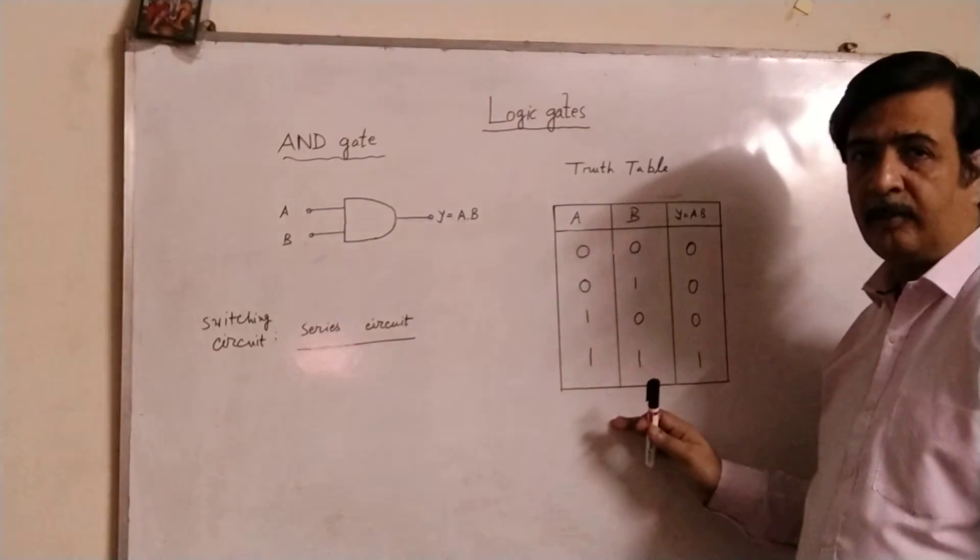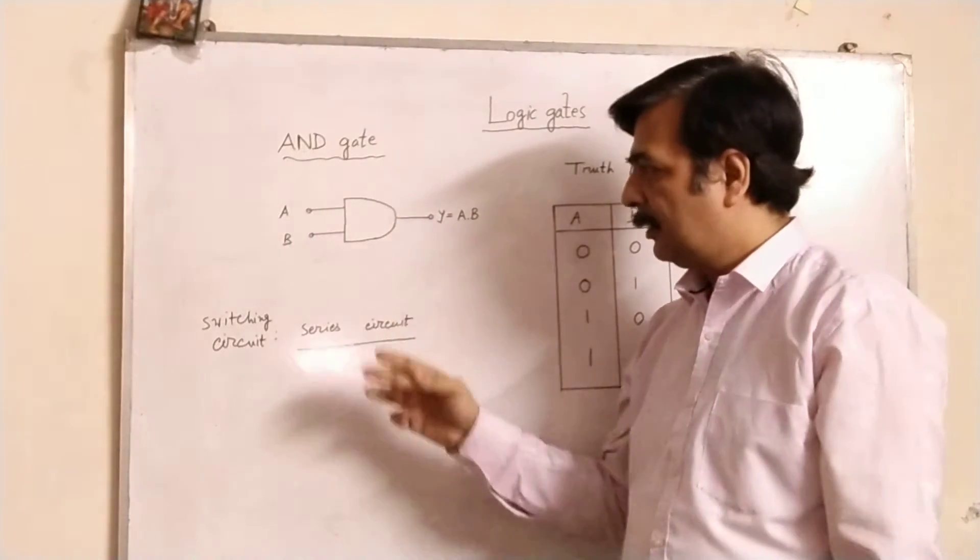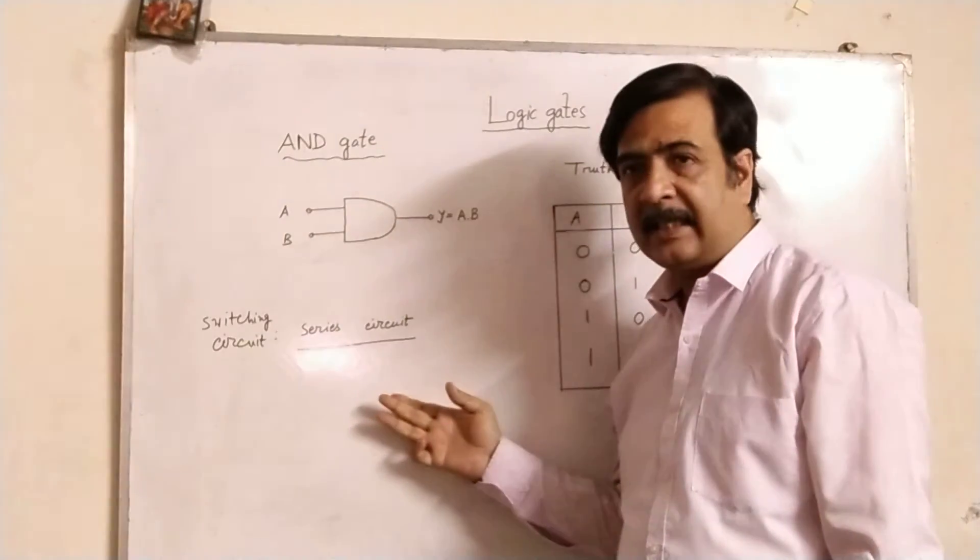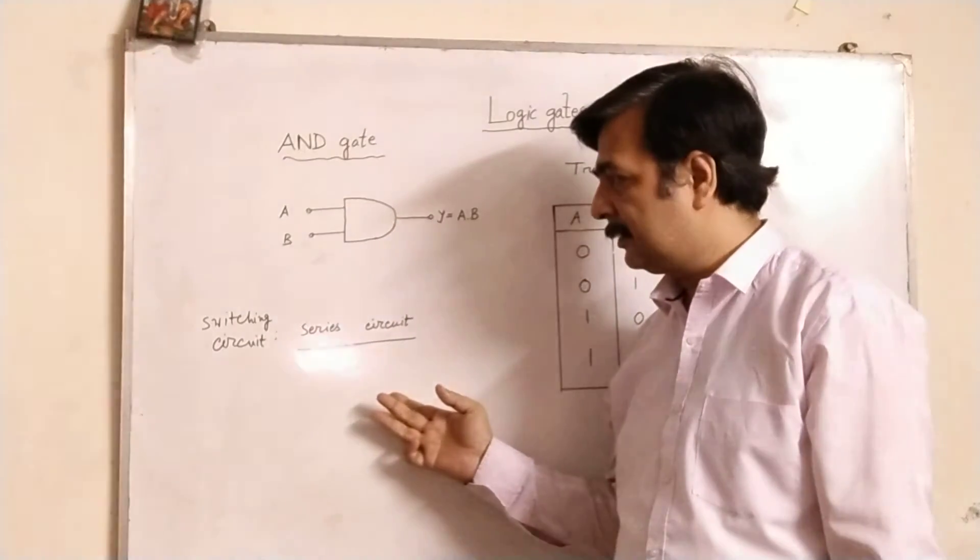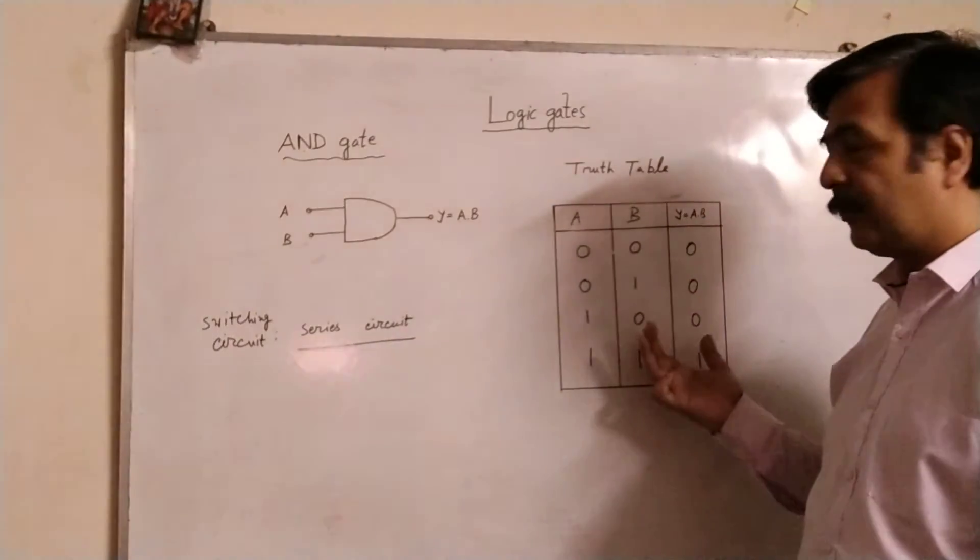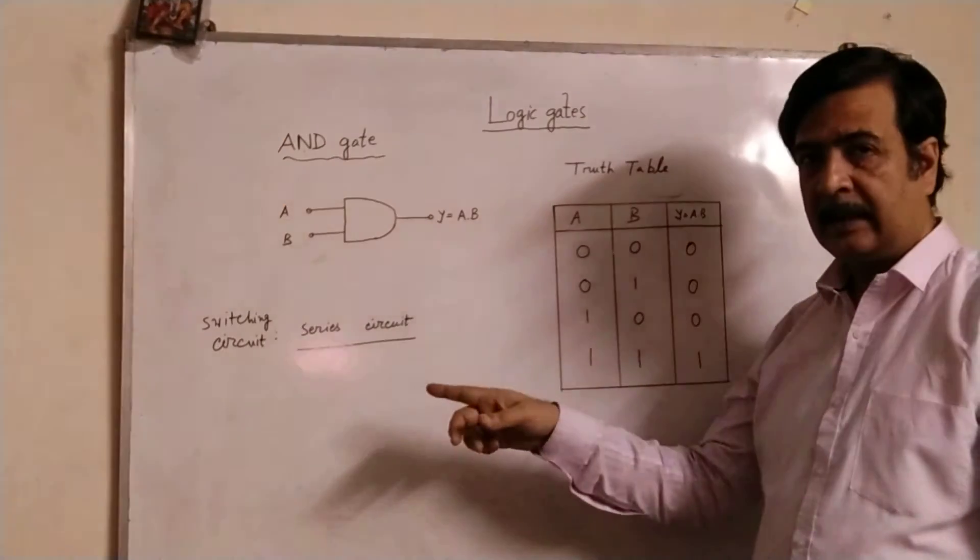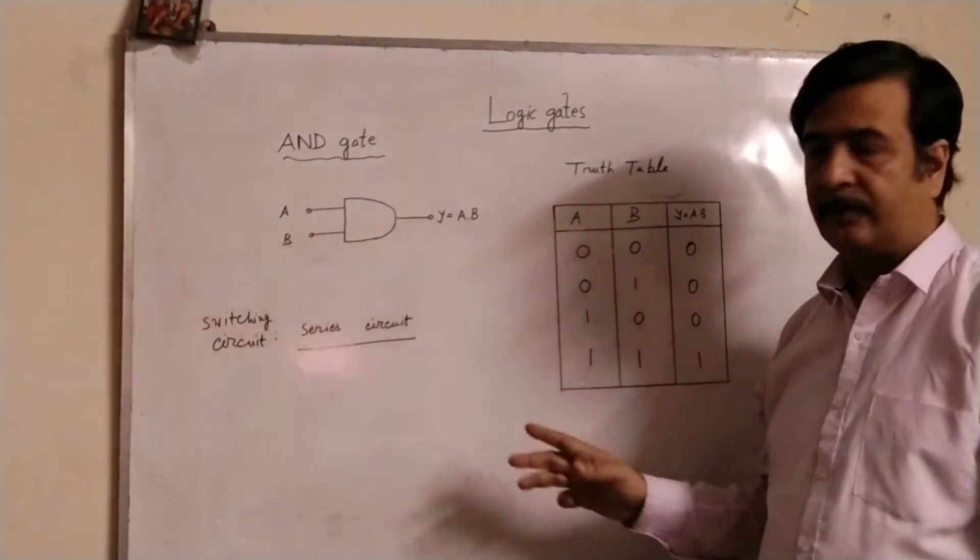So gates, one side we can think that switching circuit operation it follows. Another side we can think that it follows the Boolean algebra. 1 means switch is on and 0 means switch is off.